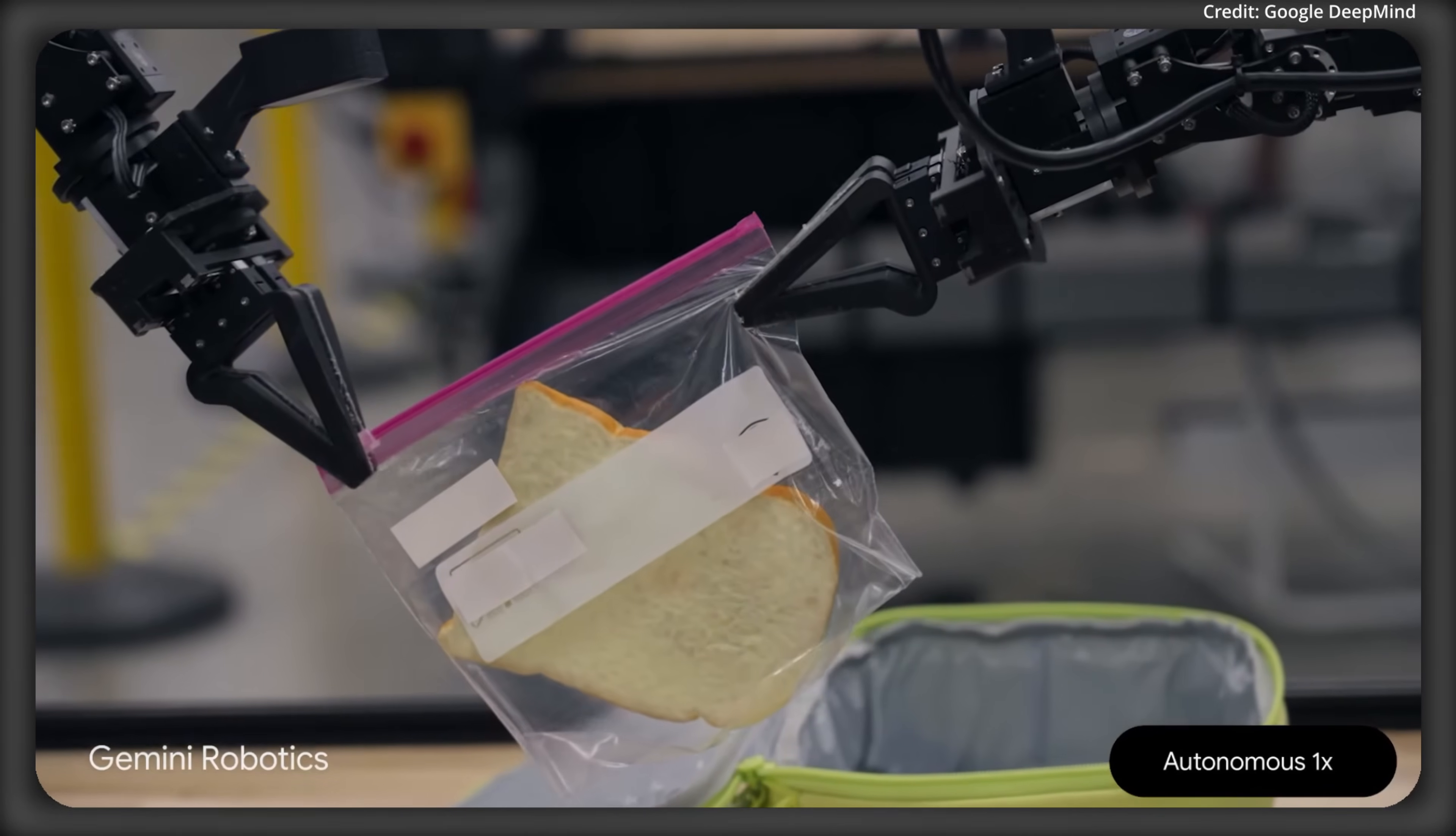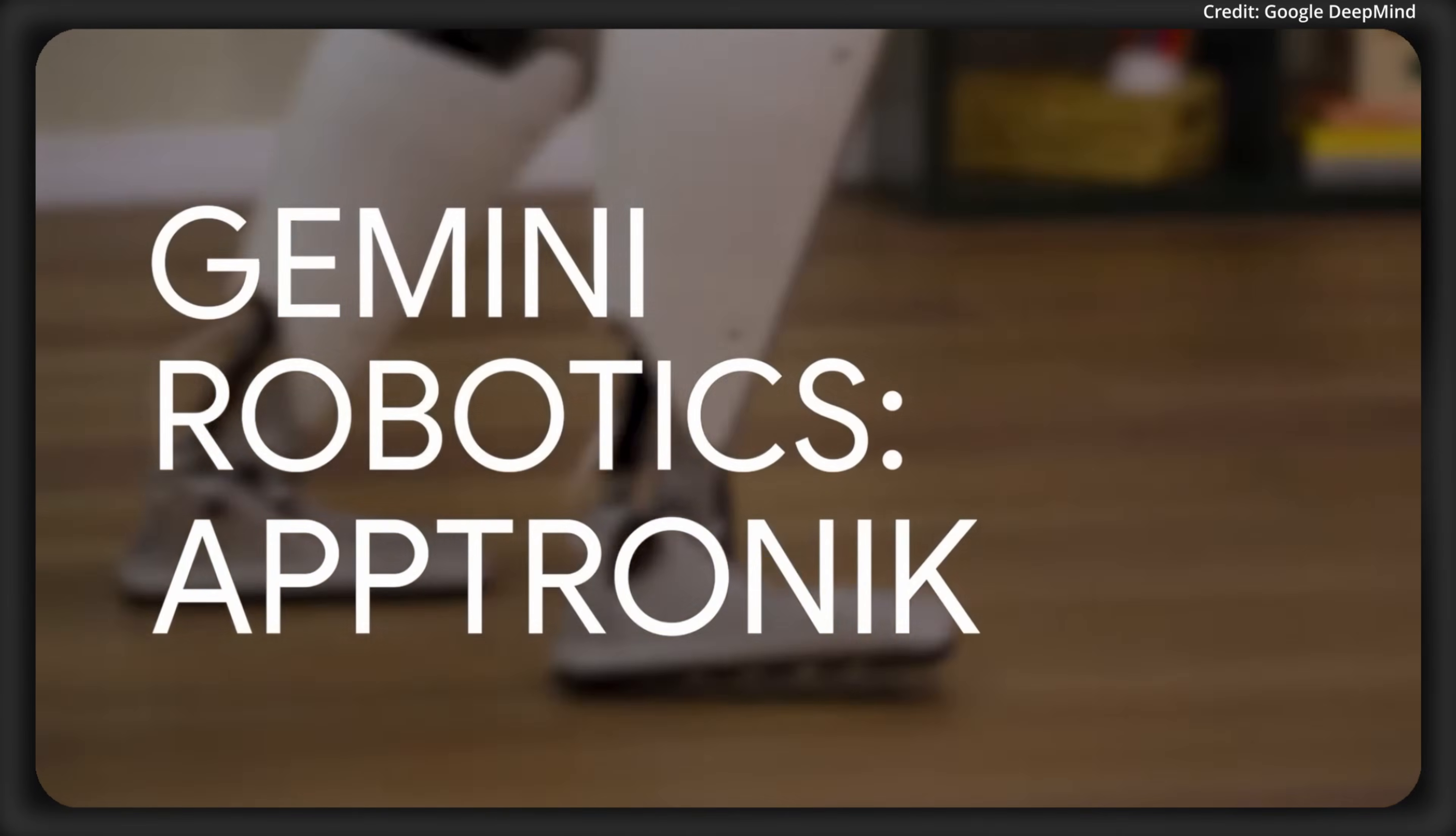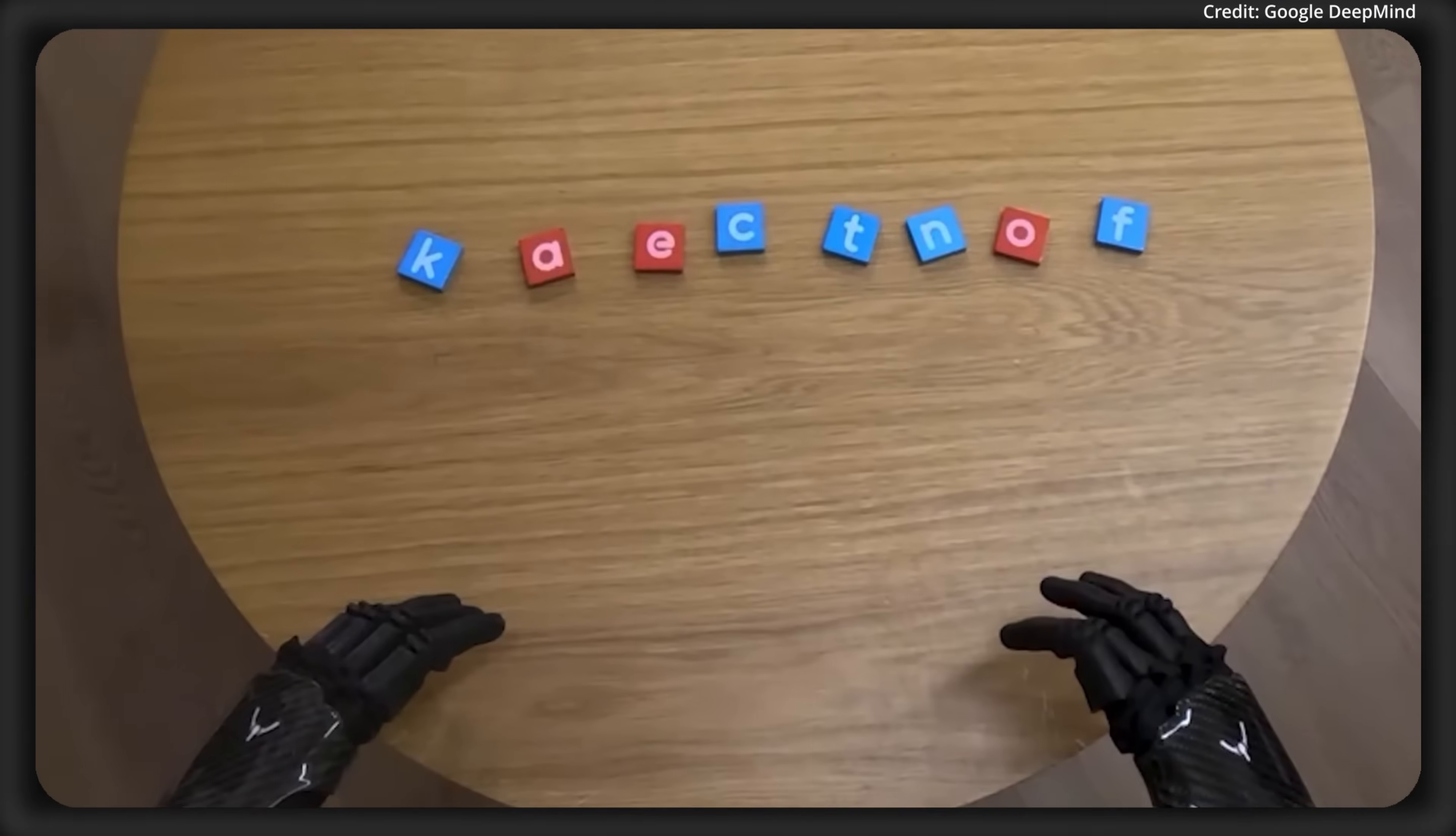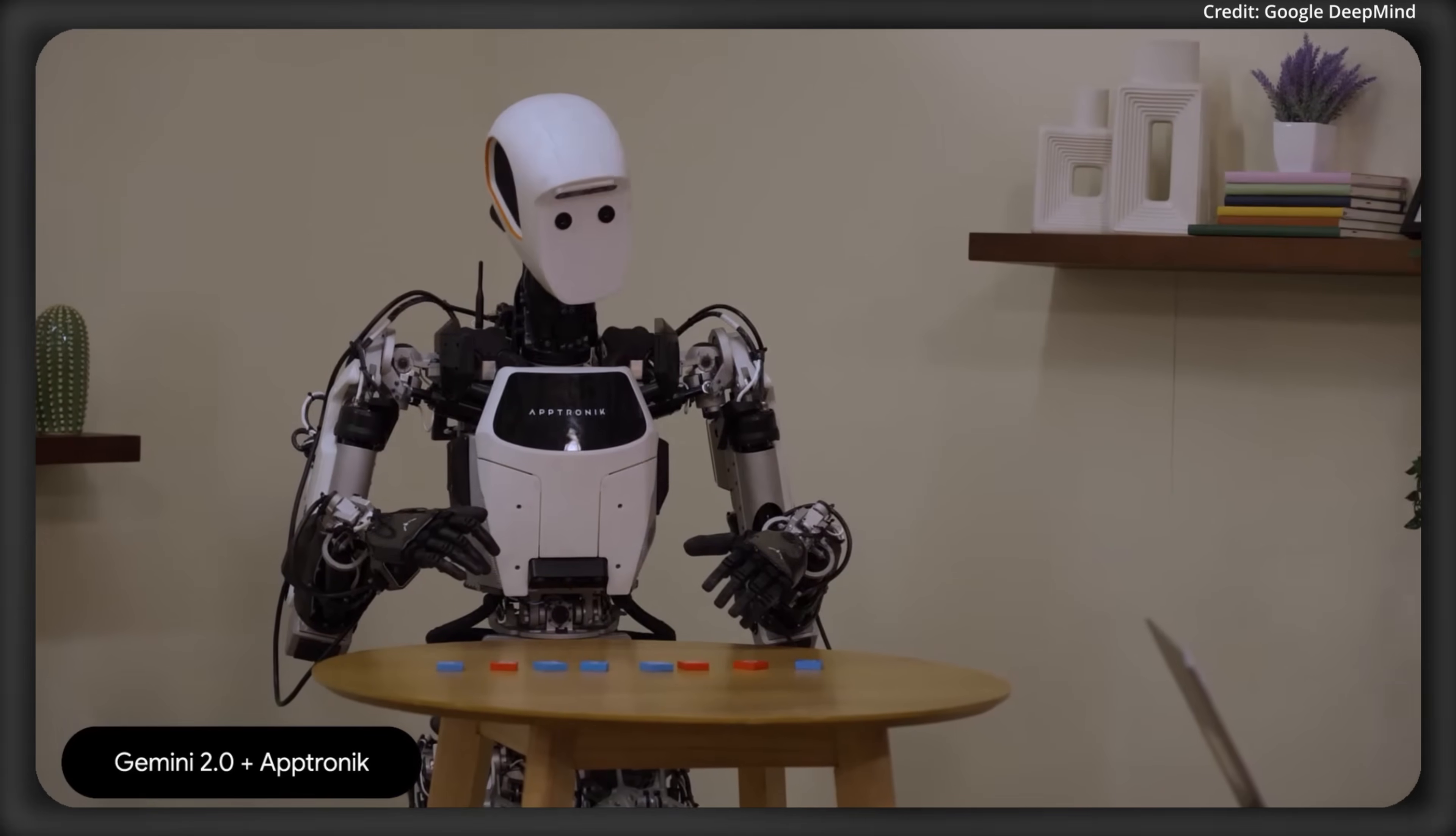You can see this in some of the different demonstrations done. For instance, look at this Aptron Acuminoid demonstration, where it's playing tic-tac-toe using its vision language action model to determine which move to make next. In another example, it has these different tiles with letters on them. And a woman says, spell out something with these tiles that you would find in a deck of cards.